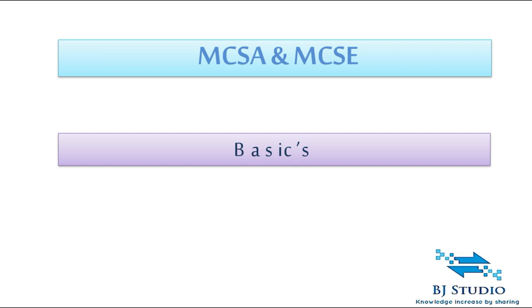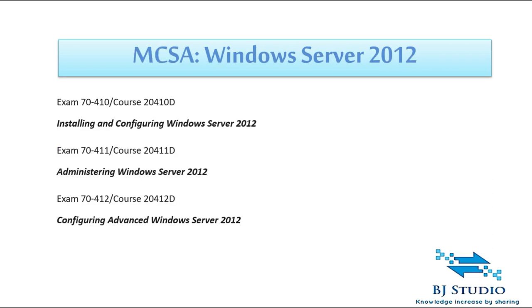When we talk about certification with respect to MCSA and MCSE, there are many things to be discussed. The first thing we are going to look into is Windows Server 2012 MCSA. When it comes to Windows Server 2012 MCSA, we have three papers: 7410, 7411, and 7412. You must clear one paper before you are eligible to write the next.